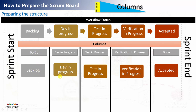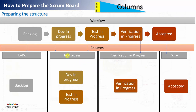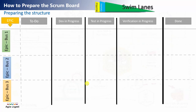You need to configure the mapping between status and column. Once done, your stories will automatically be visible in the ALM tool, or you'll need to move them manually on your physical board. It's not necessary to have a one-to-one mapping — a single column named 'In Progress' could contain stories that are in 'Dev In Progress' or 'Test In Progress.' That's how you decide how to configure the mapping of states and columns.